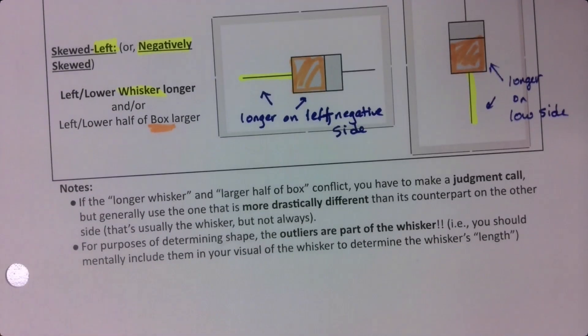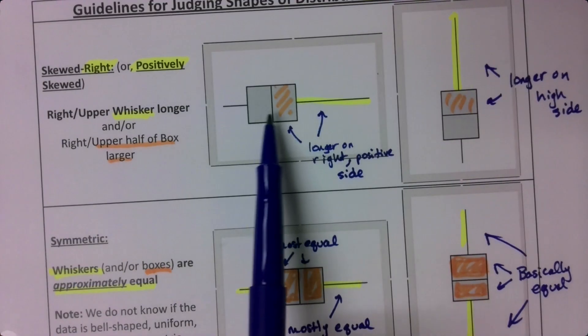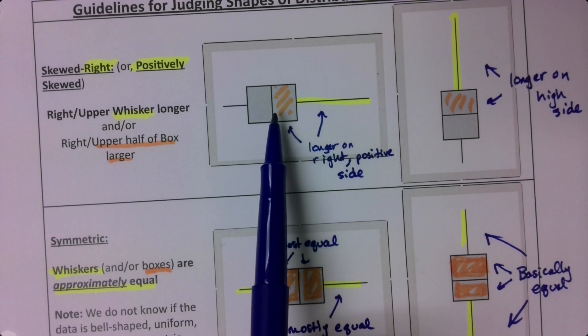Okay. Now, I mentioned it before, kind of in passing. What if they don't agree? So you can kind of see that up here. If you look at the boxes, it looks pretty symmetric. These boxes are basically equal.